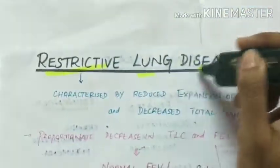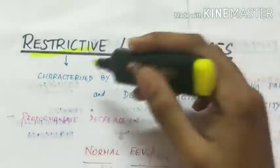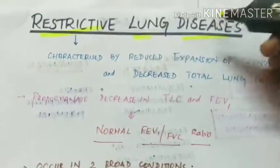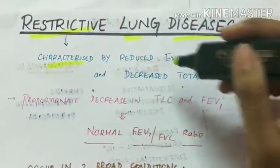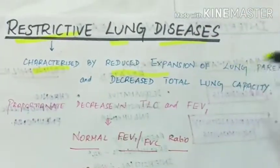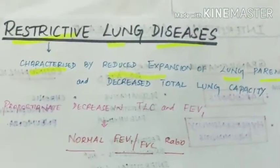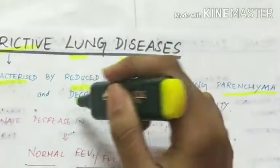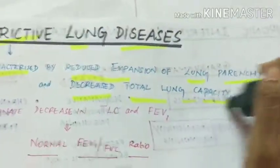Restrictive lung diseases are characterized by reduced expansion of the lung parenchyma and decreased total lung capacity.